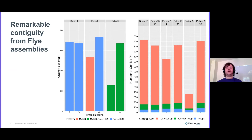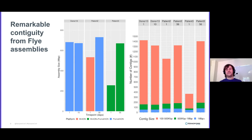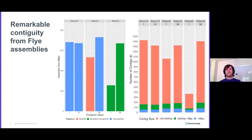On the left graph, you can see that on the PromethION and on the MinION and PromethION joined runs, we're getting about 600-plus megabases out of the assembler. On the right, we can show that the contigs are actually good as well — it's not just all short stuff. In red, we've got for each sample about 1,000 contigs between 100 and 500 kilobases. In green, maybe about 100 that are between 500 kilobases and one megabase. And in blue, about 50 contigs per sample that are bigger than a megabase.